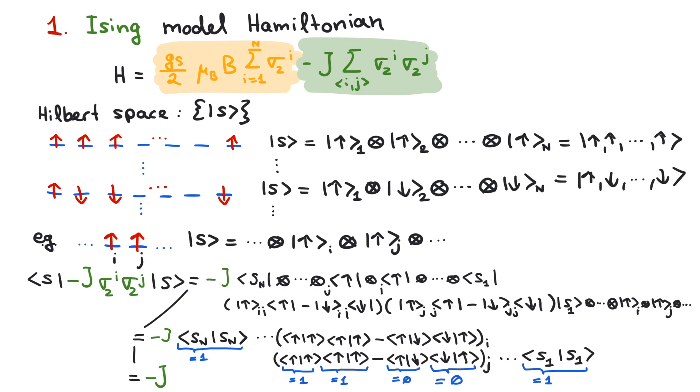You can try yourself to obtain the result for both spins pointing down. With this, we fully understand our model Hamiltonian and completed the first step.